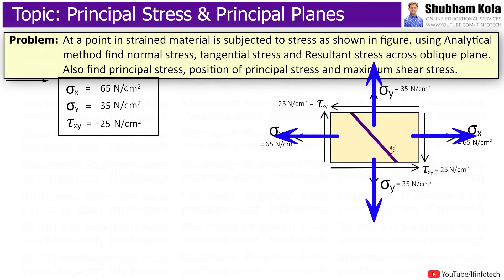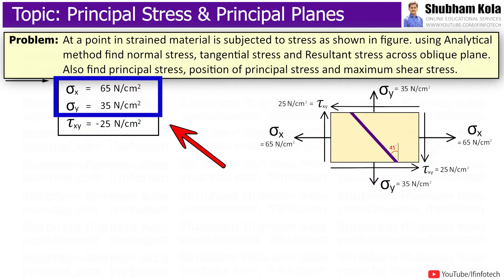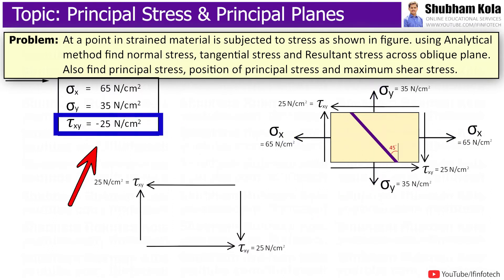In this problem, the type of stress is tensile. So I will take these stresses with positive sign. And these tensile stresses are accompanied by shear stress, i.e. tau xy.